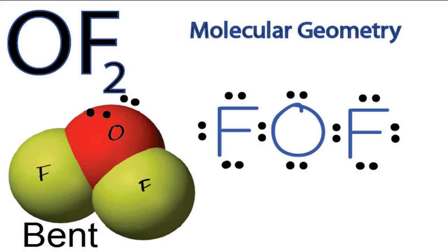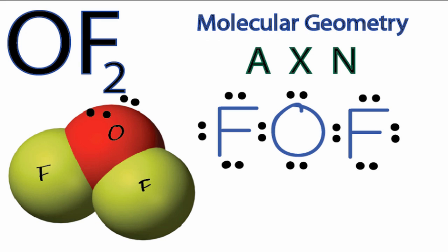We could also use the AXN notation to determine the molecular geometry for OF2. A is the central oxygen. X is the number of atoms attached to the oxygen—there are two fluorines. And N is the number of lone pair electrons. We have two pairs of them, so we'll put a 2 right there.